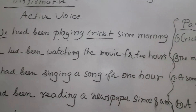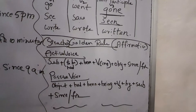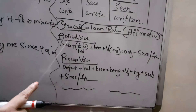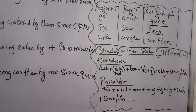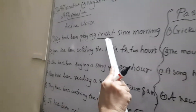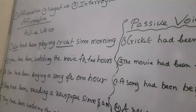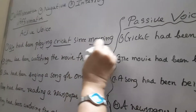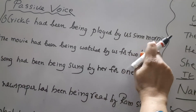These are the golden rules of the structure for the affirmative of the Past Perfect Continuous Tense. In active voice: Subject + Had + Been + Verb-ing + Object + Since/For + remaining words. In passive voice: Object + Had + Been + Being + V3 + By + Subject + Since/For + remaining words. Note: whether the object is singular or plural, 'Had' always comes.